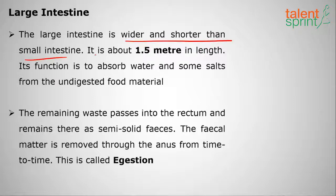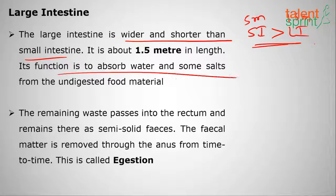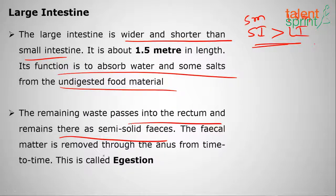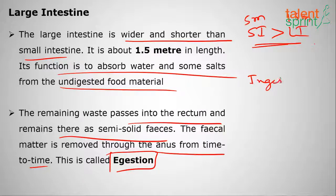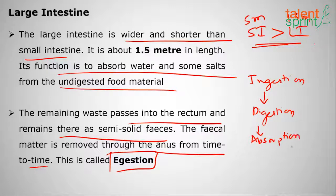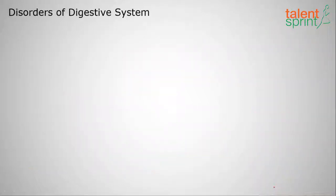The food that remains undigested and unabsorbed enters into the large intestine. The large intestine is wider but shorter than the small intestine — about 1.5 meters compared to 5 meters. Its function is to absorb water and some salts from the undigested food material. The remaining waste passes through the rectum and remains there as semi-solid feces. The fecal matter is removed through the anus — this process is called egestion.